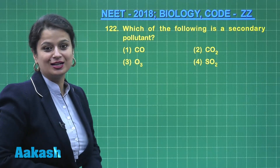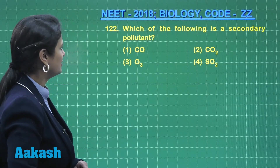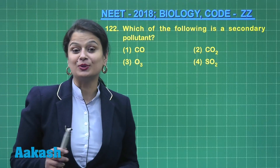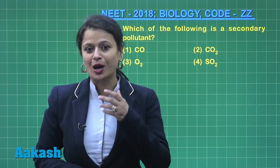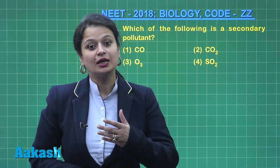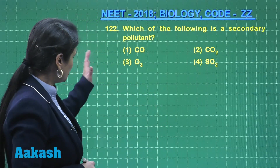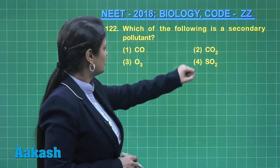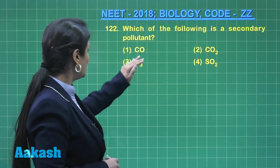Coming to question number 122: which of the following is a secondary pollutant? Before solving this question, we must know what is a primary pollutant. A primary pollutant is one which is directly emitted into air from sources. Looking at the options — carbon monoxide, carbon dioxide, sulfur oxides — they all are primary pollutants.